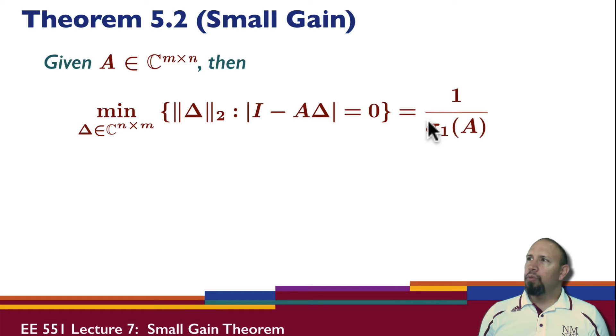So again, in the proof, we actually go through and form a delta that does this. The delta that does that, again, is going to be a dyad. And that dyad is associated with the largest singular value. Then the vectors for that dyad are going to be singular value decomposition, singular vectors.